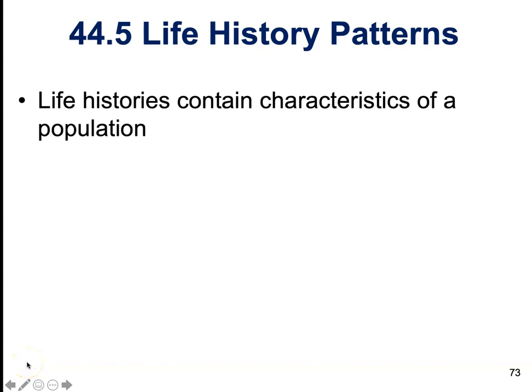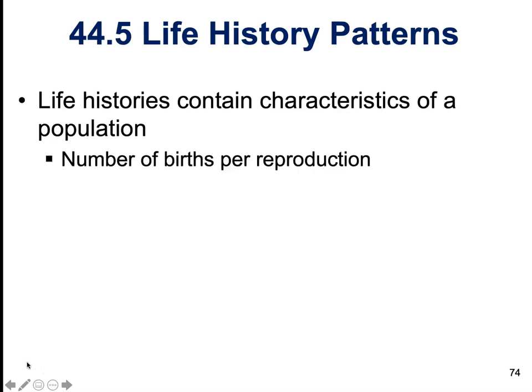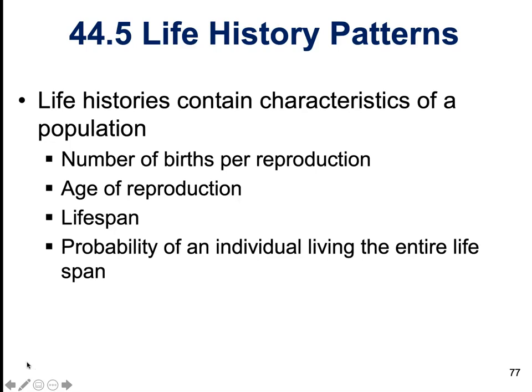Life history patterns contain characteristics of populations — things like the number of births per reproduction, the age of reproduction, or the lifespan. All of these things can influence, shape, and define a population. The probability of an individual living its entire lifespan also influences life history patterns.